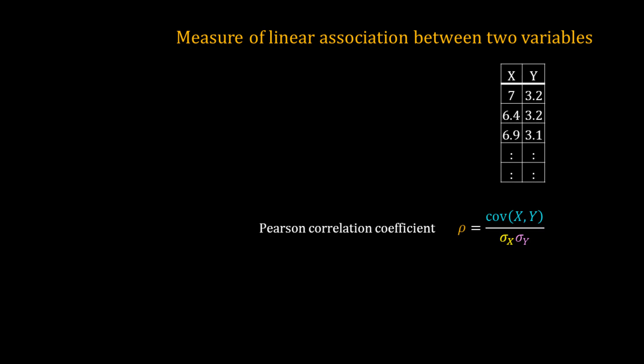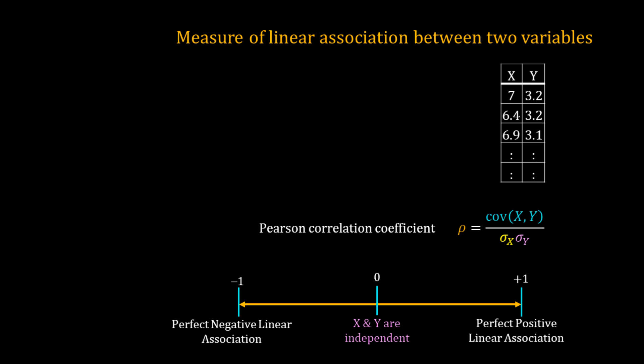Pearson correlation coefficient is a measure of linear association between two variables. It is equal to the covariance between x and y divided by the product of the standard deviation of x and the standard deviation of y. This coefficient varies from minus 1 to 1. It will be 0 when x and y are independent, plus 1 for a perfect positive linear association, and minus 1 for a perfect negative linear association.